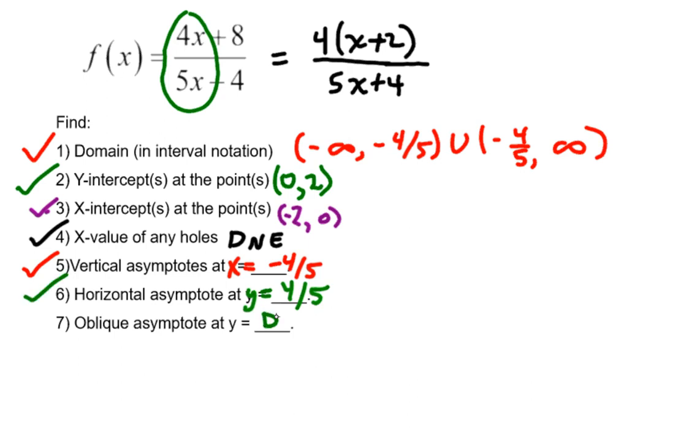Which would be in the form y equals mx plus b. So we only have one or the other. So we are done with number seven as well. Thank you.